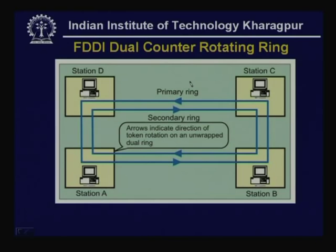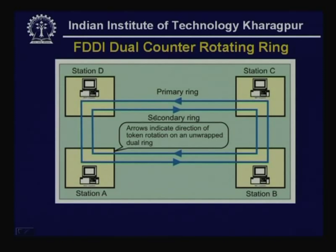FDDI uses a dual counter-rotating ring for reliability. In 802.5, there is only one ring rotating anticlockwise, but in FDDI there are two rings: a primary ring and a secondary ring. The primary ring is normally in operation and the secondary ring is essentially standby. The primary ring rotates anticlockwise and the secondary ring clockwise, requiring two ports — four ports total — for each station connected to the ring.